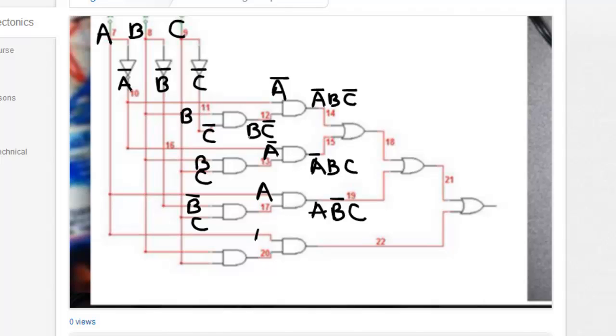And then down here I have an A, I have an A, I have a B, and I have a C. So this becomes A, B, C.